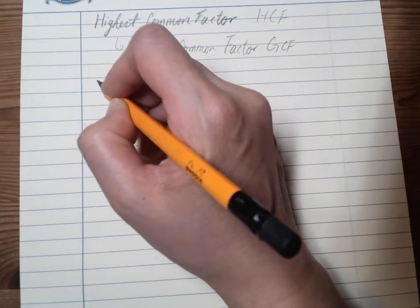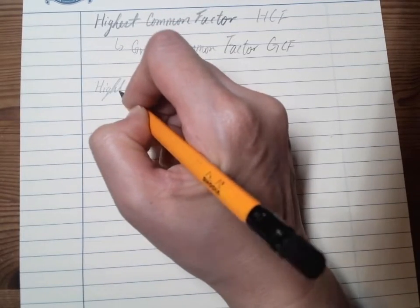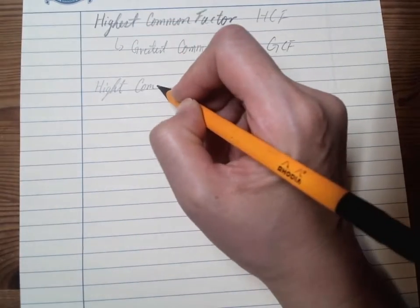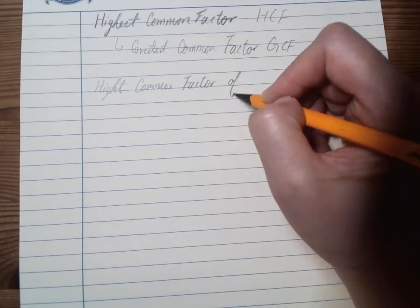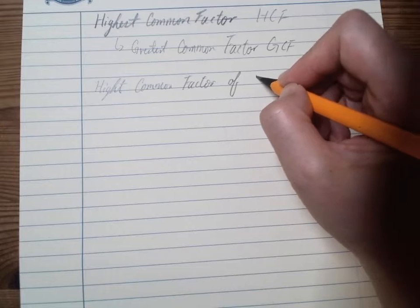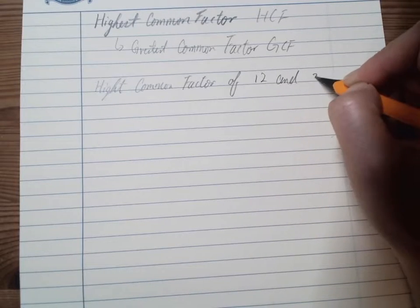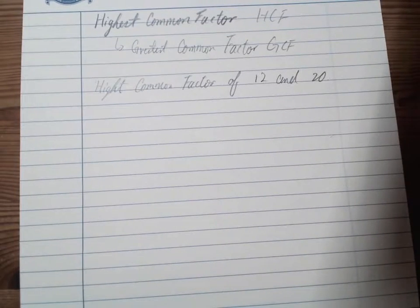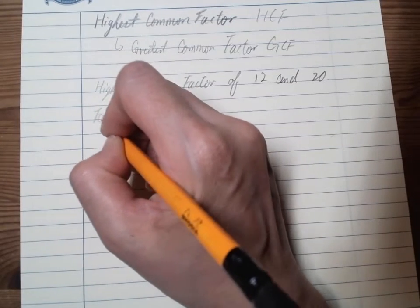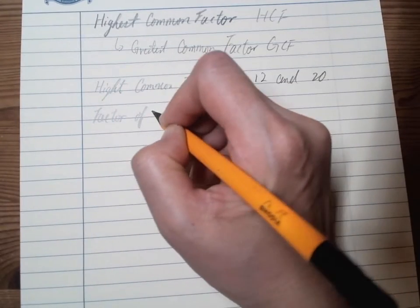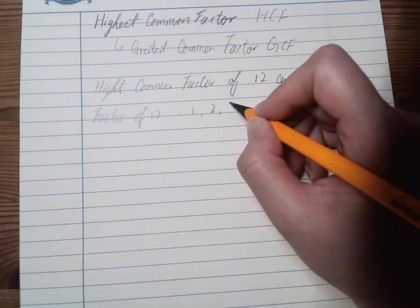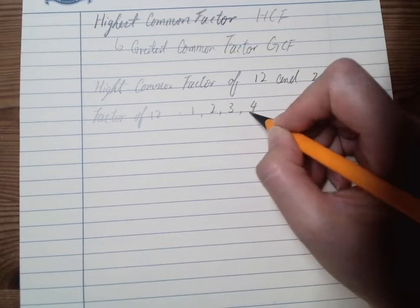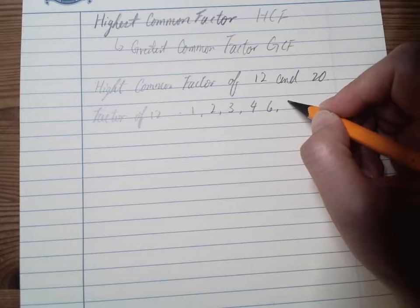So the highest common factor of, say, 12 and 20. So the old method is to list them out. So the factor of 12 is 1, 2, 3, 4, 6, and 12.